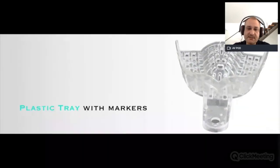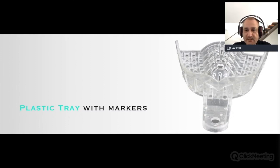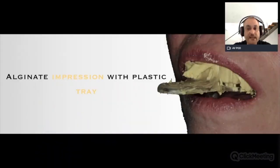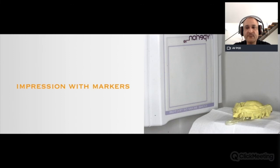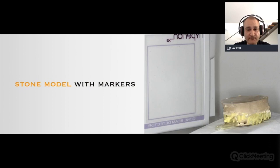Here is an example: a plastic tray with small markers on the handles and lateral ridges. An alginate impression was taken, kept inside the patient's mouth, and then the first CBCT was taken — with the impression, tray, and markers. Then the alginate impression was removed, taking care not to cause distortion, and scanned separately in the CBCT. Optionally, plaster can be poured into the impression and a third scan taken.